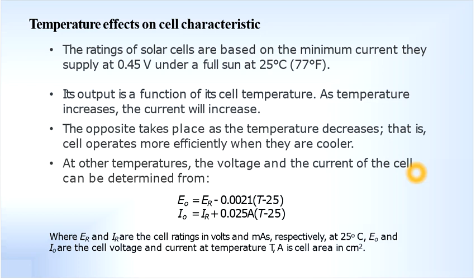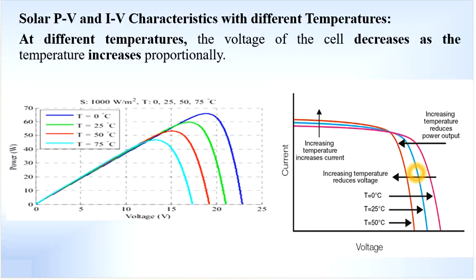Now let us see how the characteristics will look with temperature variation. These are the solar PV and IV characteristics shown here for different temperatures. The voltage of the cell decreases as the temperature increases proportionally.